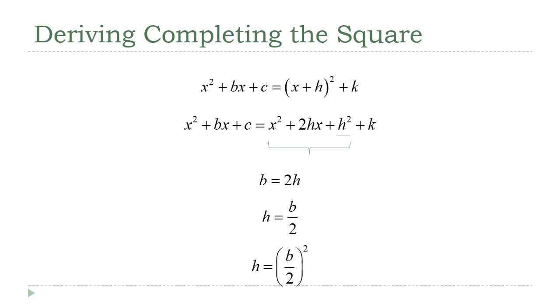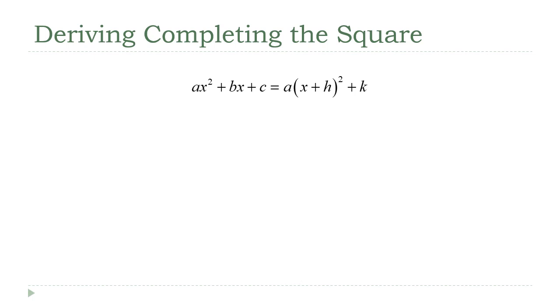What about this case? It's a little different because we've got an a coefficient out there in front of the x squared. Now you may remember from your algebra classes you're always told that formula only works when there's no number, or an implicit one, in front of that x squared term in the original polynomial. That was what I did on the previous slide. So what about this case?